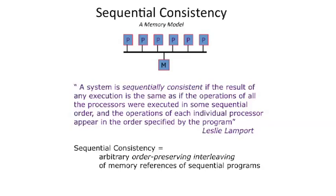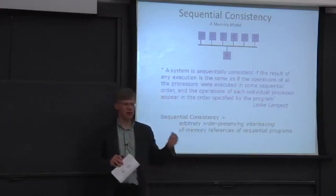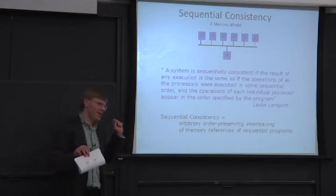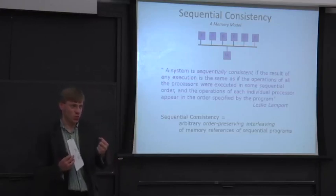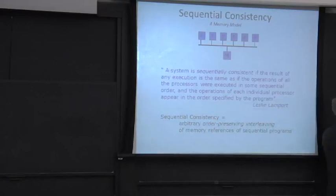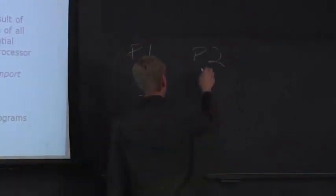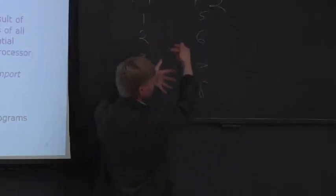What sequential consistency is, is the idea that you take all of the instructions in all of the programs executing on all the processors, and you guarantee that the execution sequence seen by all processors is some valid in-order interleaving of those instructions relative to the processors themselves. So to give you an example, if you have processor 1 and processor 2, processor 1 executes instructions 1, 2, 3, 4 and processor 2 executes instructions 5, 6, 7, 8, you're guaranteed that some interleaving of those is what happened in sequential consistency.